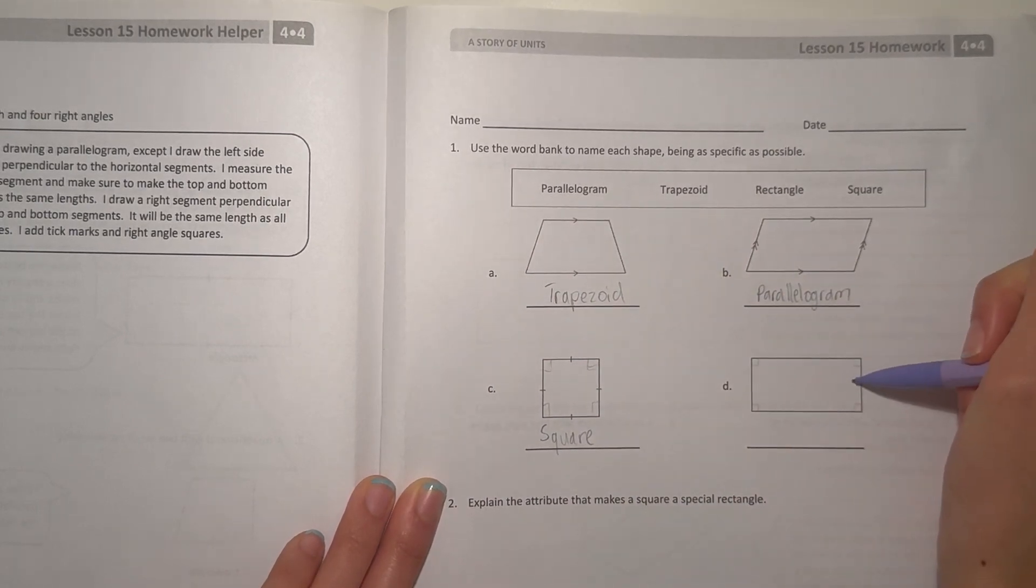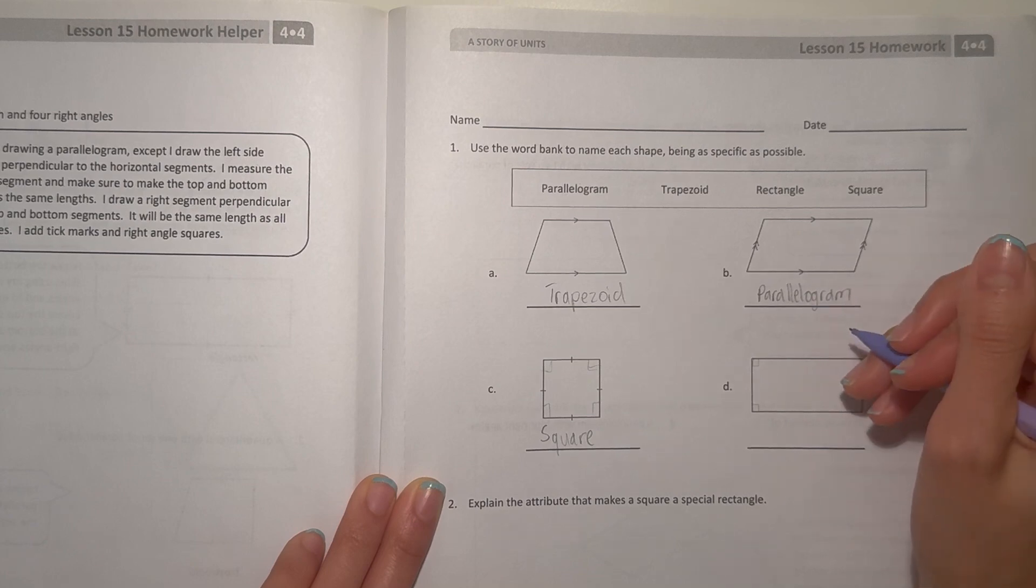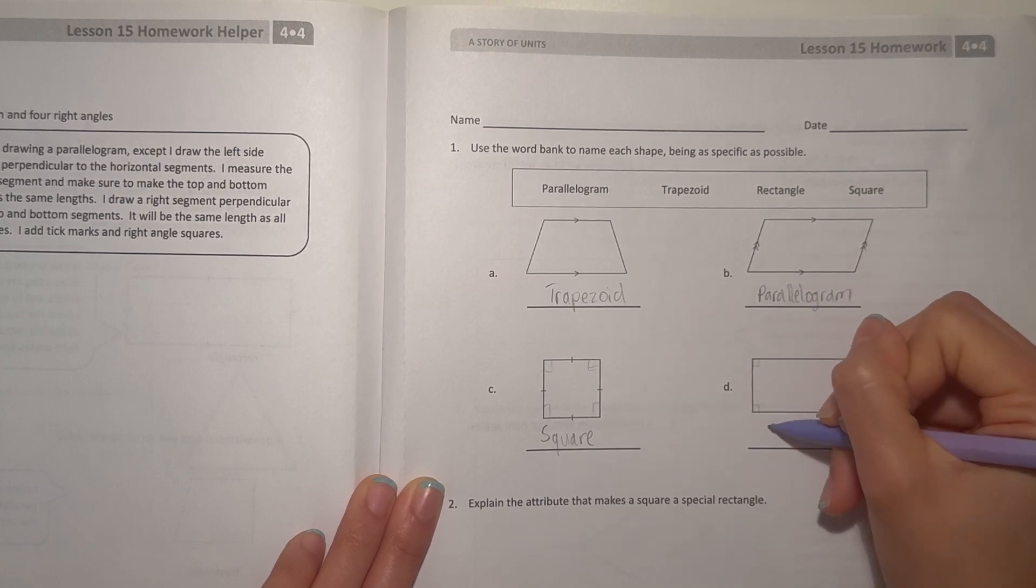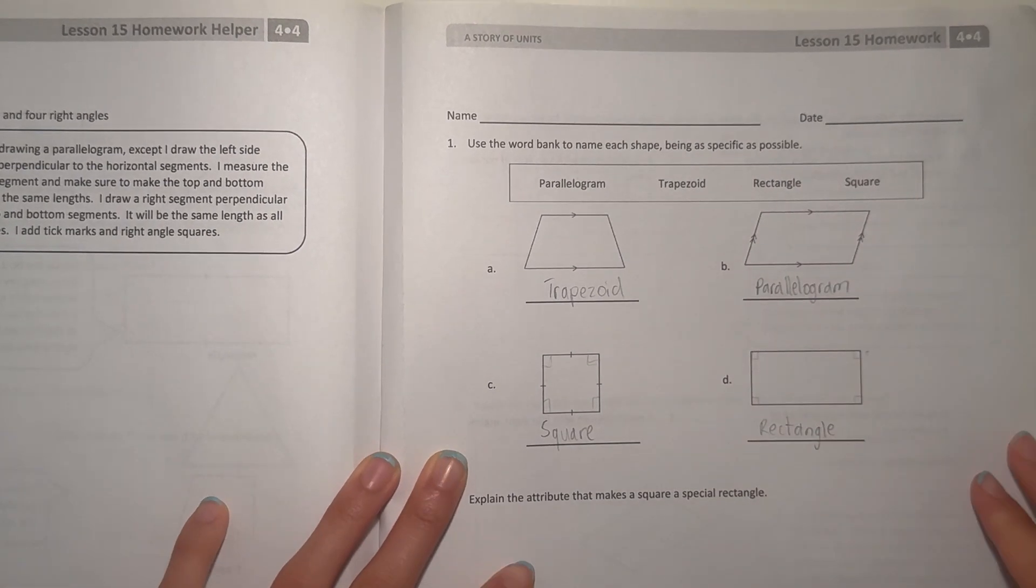And a rectangle also has four right corners. The sides, they're opposite but equal. They're parallel, but the sides aren't equal. They're all different lengths. Actually, they're not all different lengths, but they will be different lengths.